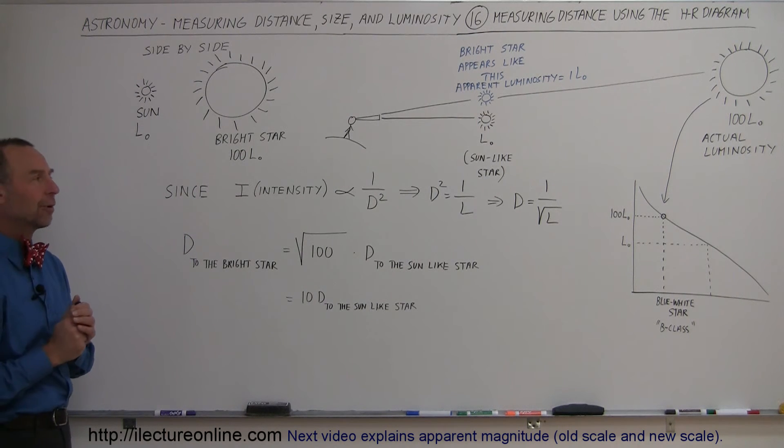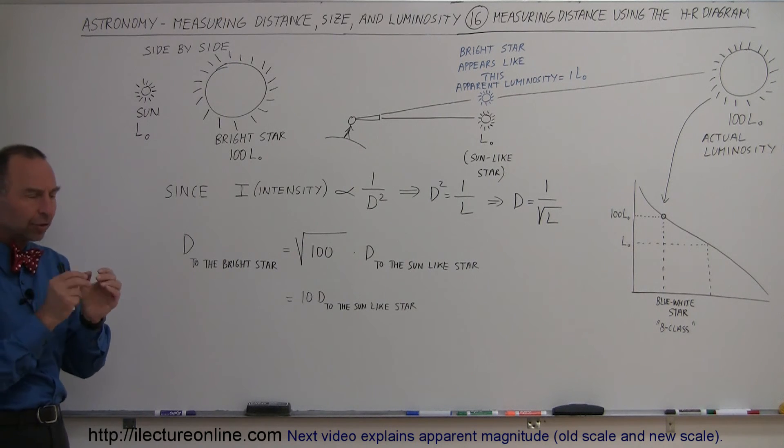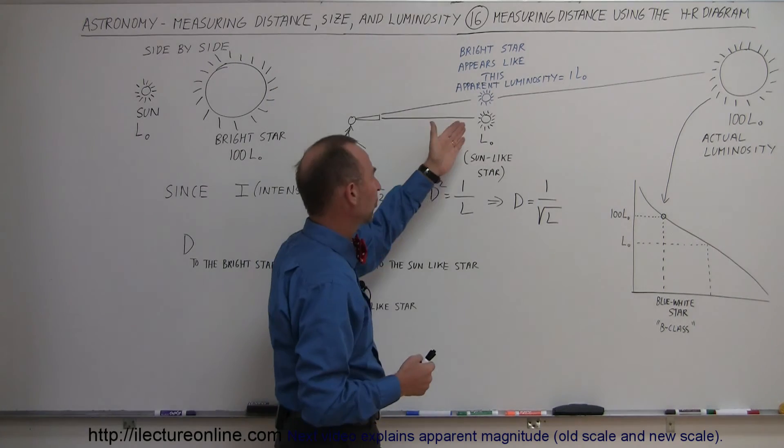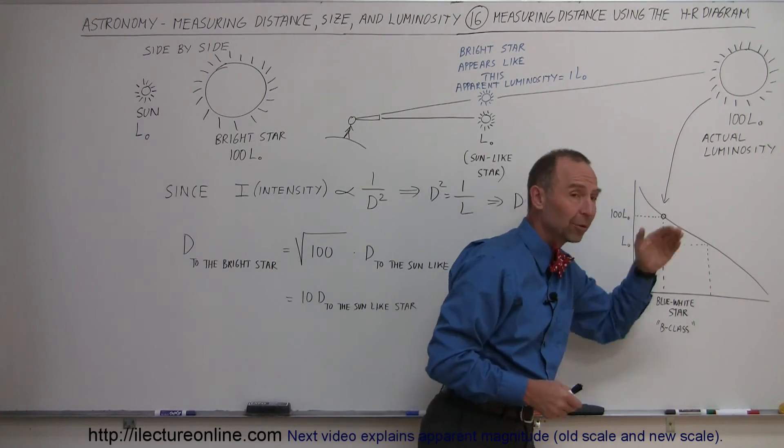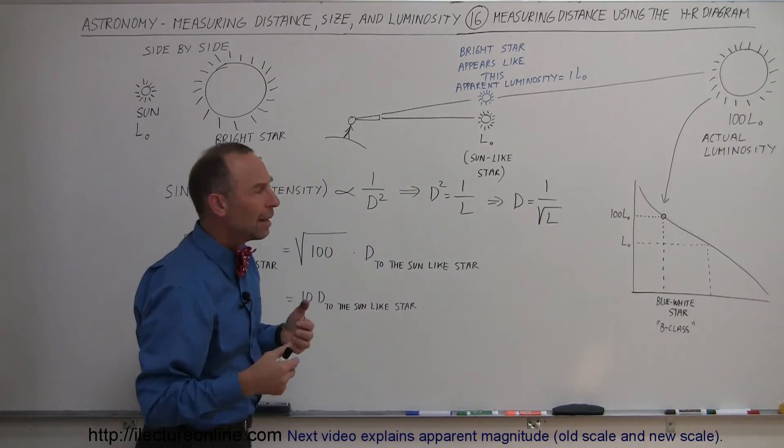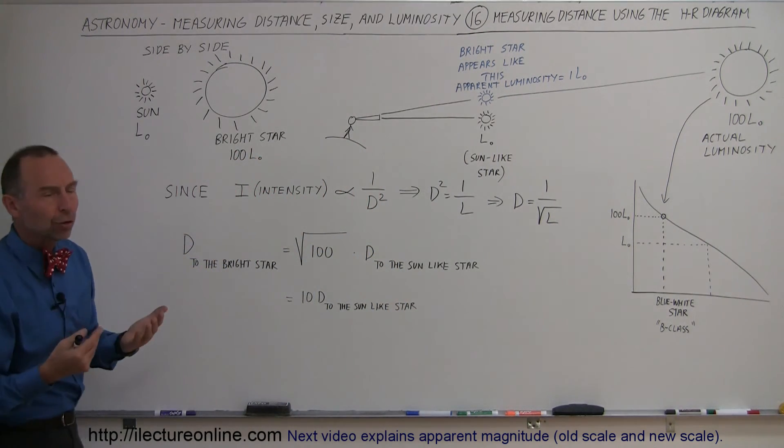Now that's how we use the H-R diagram. There's only one problem. I still need to somehow establish the base distance for any star. For example, how far was the sun star? I now realize this is 10 times as far away, but how far is it to this star? In order to do that, we came up with a brightness scheme called magnitudes.